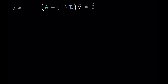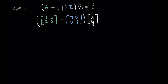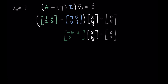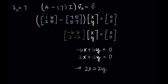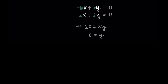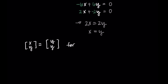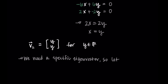Now we repeat this process for lambda two, which is 7. I take matrix A and subtract 7 times the identity, multiplied by the eigenvector and set equal to the zero vector. Simplifying by combining those two matrices, I get negative 6, 6 and 2, negative 2. From this I get the equations negative 6x plus 6y equals 0 and 2x minus 2y equals 0. Both yield the same result: x equals y. So eigenvectors for this eigenvalue are of the form (y, y) for any y. Letting y equals 1, I choose eigenvector 1, 1.